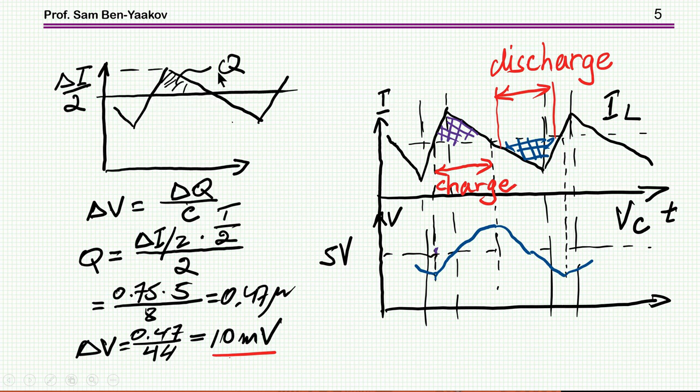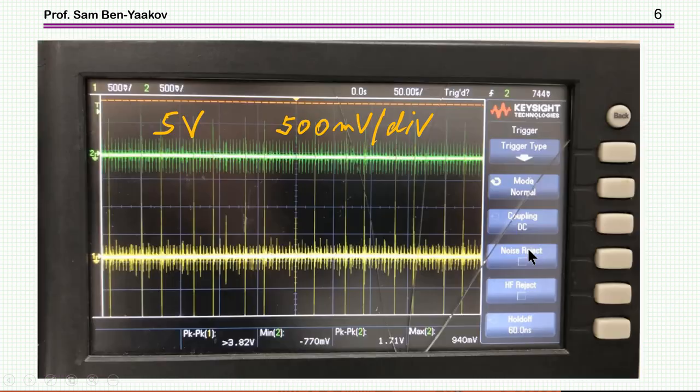This can be calculated by knowing the delta I and this is half the period. And then this area is the charge. Therefore I come up with 0.47 microCoulombs. This comes out to be 10 millivolts. So the expected ripple here is really very small, no problem in that.